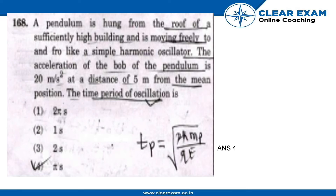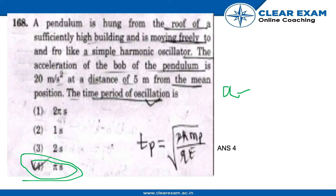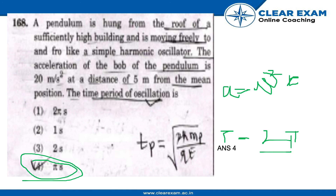We know that the time period T = 2π/ω. Substituting the value of ω, we get T = π s. Hence the correct answer is π s. The formulas used are a = ω²x and T = 2π/ω.